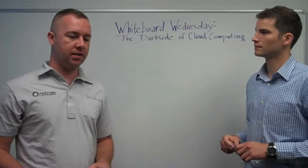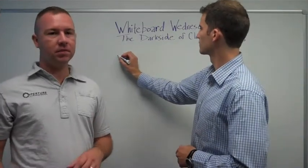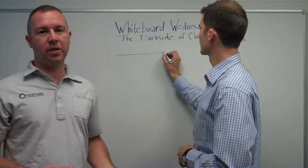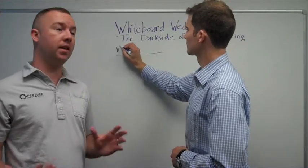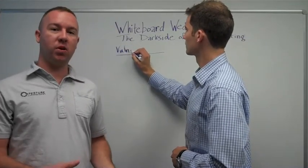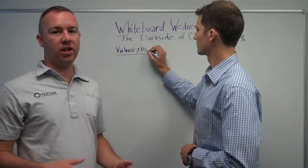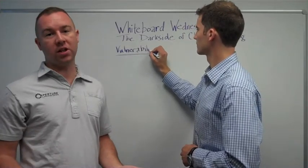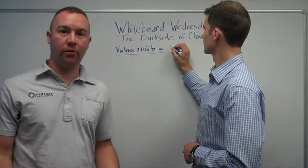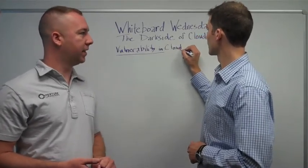The first bucket is: I'm running in the cloud, I've left a vulnerability on one of my machines, that vulnerability is exploited, and then somebody uses my machines for malicious intent or attacks me directly. That's the first bucket.